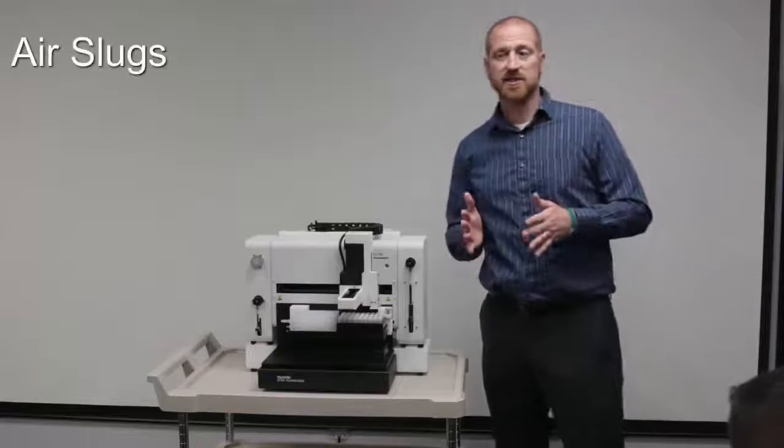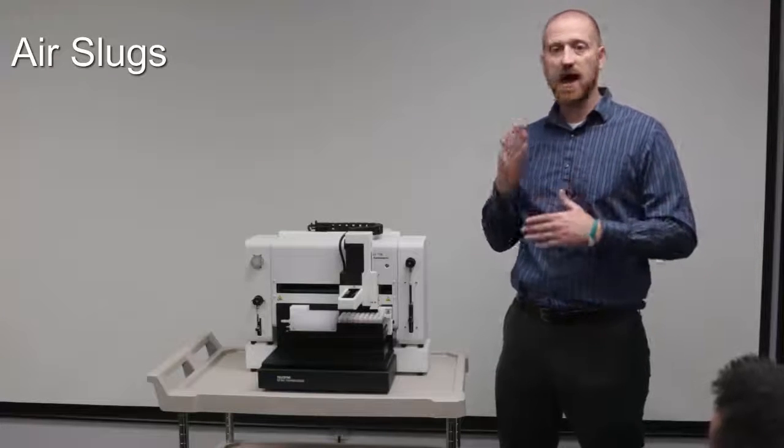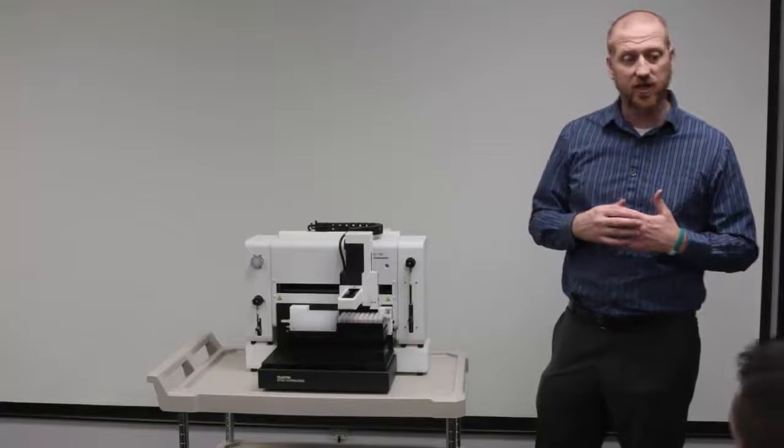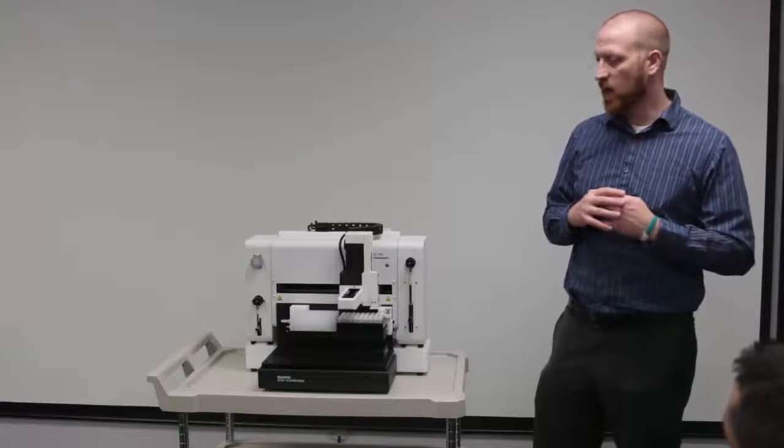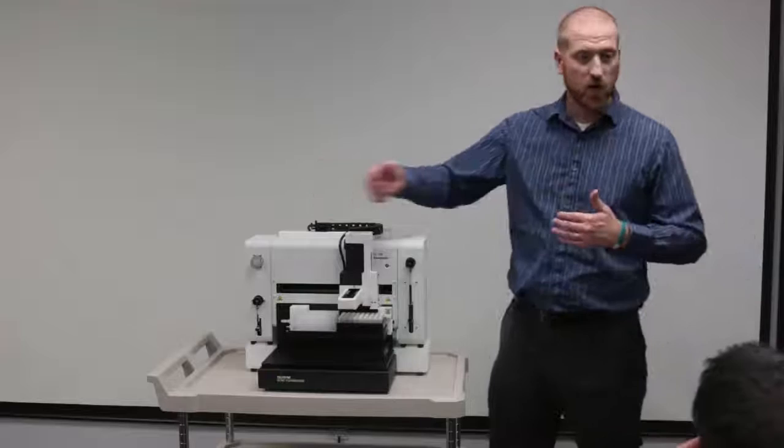Now, what the air slugs do is they help provide a really high-rising and quick-dropping, quick-rinsing signal, so you get a good leading and trailing edge to your ICPMS. Why that's useful is a traditional automation system, again, we use a pull-through method, so you're going to have your sample followed by your diluent or rinse solution right after that. What happens is you're going to have diffusion of that sample into your rinse, which creates an extended washout.